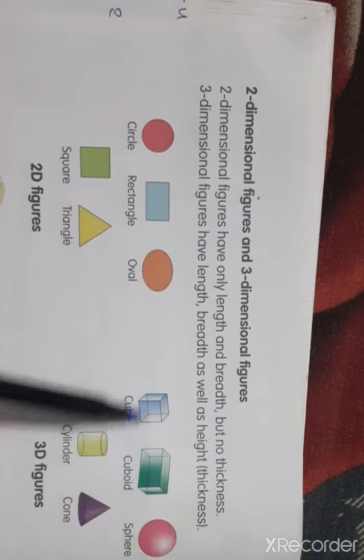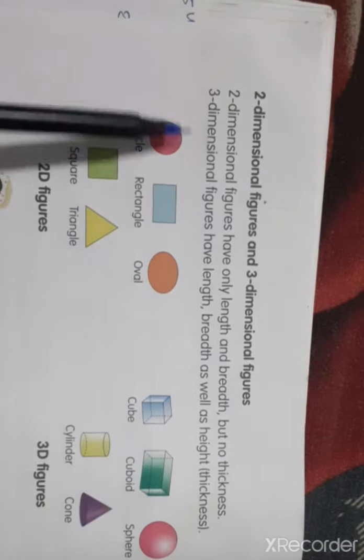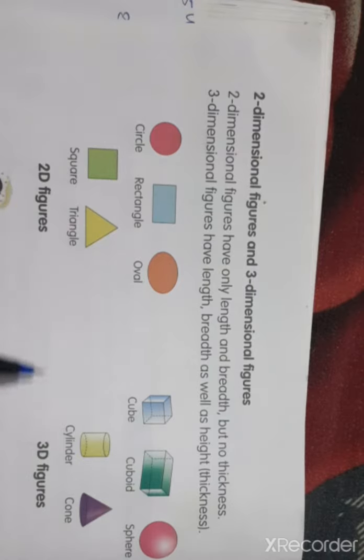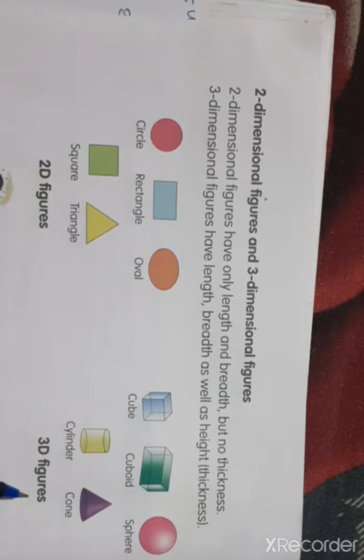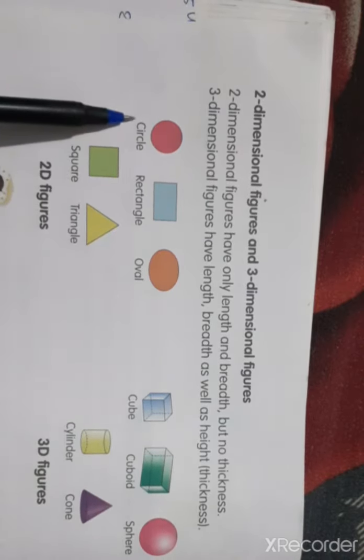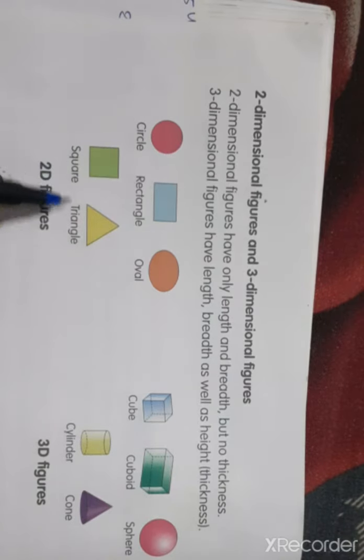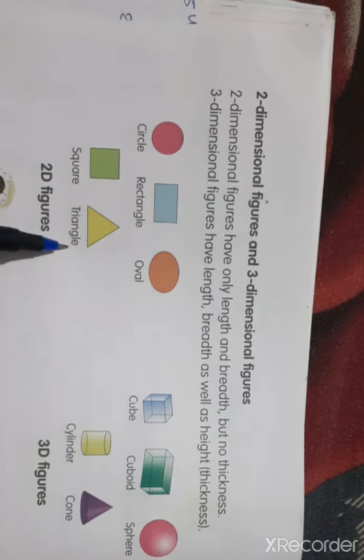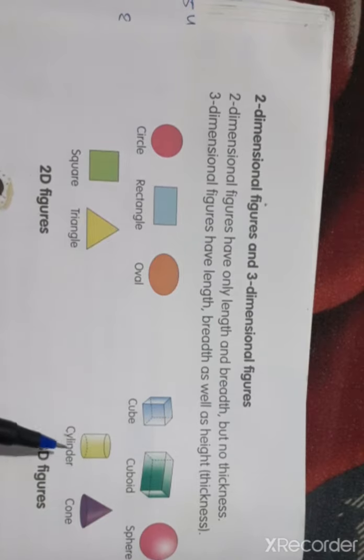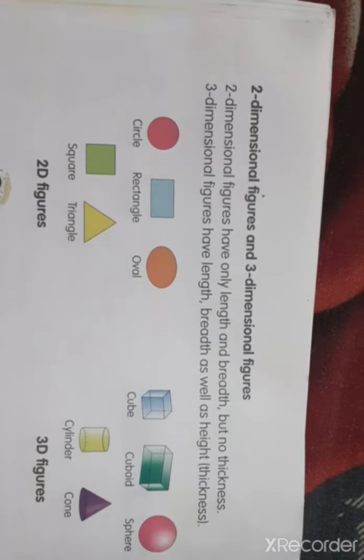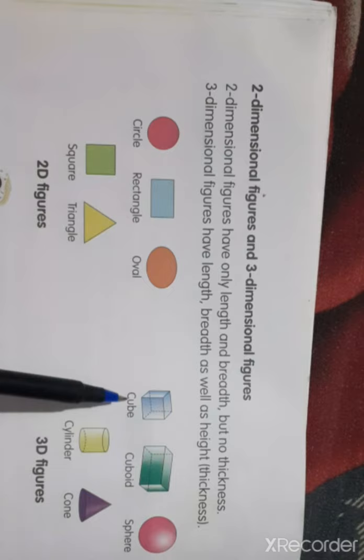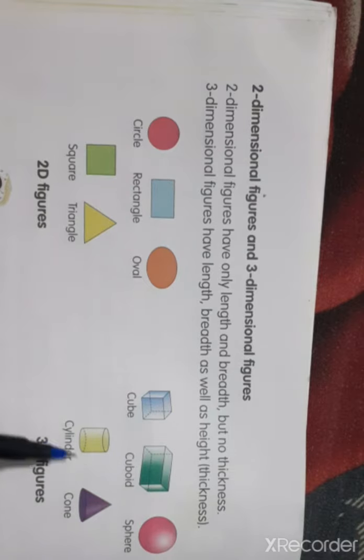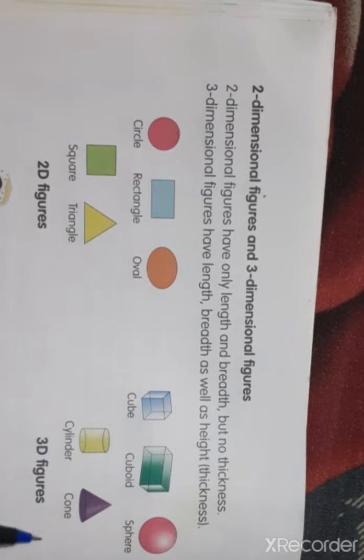So here is the 2D figures and here is 3D figures. 2D figures: circle, rectangle, oval, square and triangle. And here 3D figure: cube, cuboid, sphere, cylinder and cone, okay students.